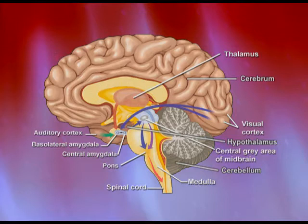The medulla oblongata is a very important part — it deals with the major life-sustaining and life-supporting functions. All the vital, automatic, involuntary internal functions are supported by this structure. It is a connection between the spinal cord on one end and the midbrain on the other end.